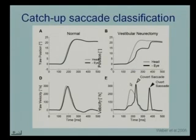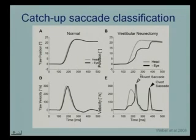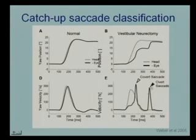This is in the inhibitory direction of the only semicircular canal — so this is the off direction, the push response. Here is one saccade which occurs after the head movement, which will be visible to the observer — we call this overt. And this saccade which occurs during the head movement will be invisible to the observer — which we call covert.